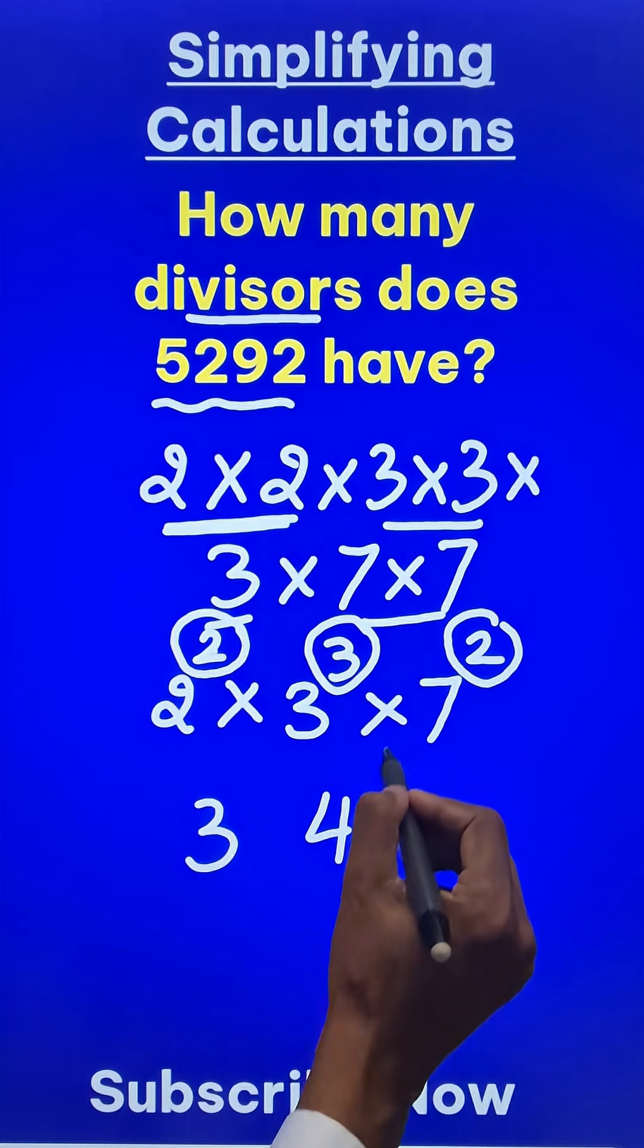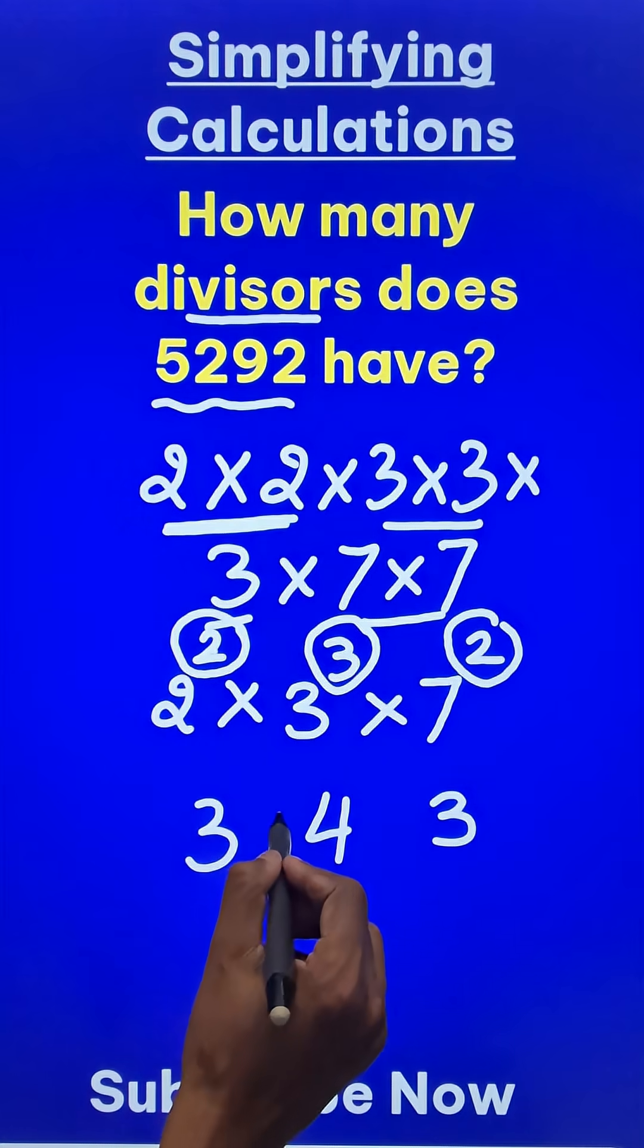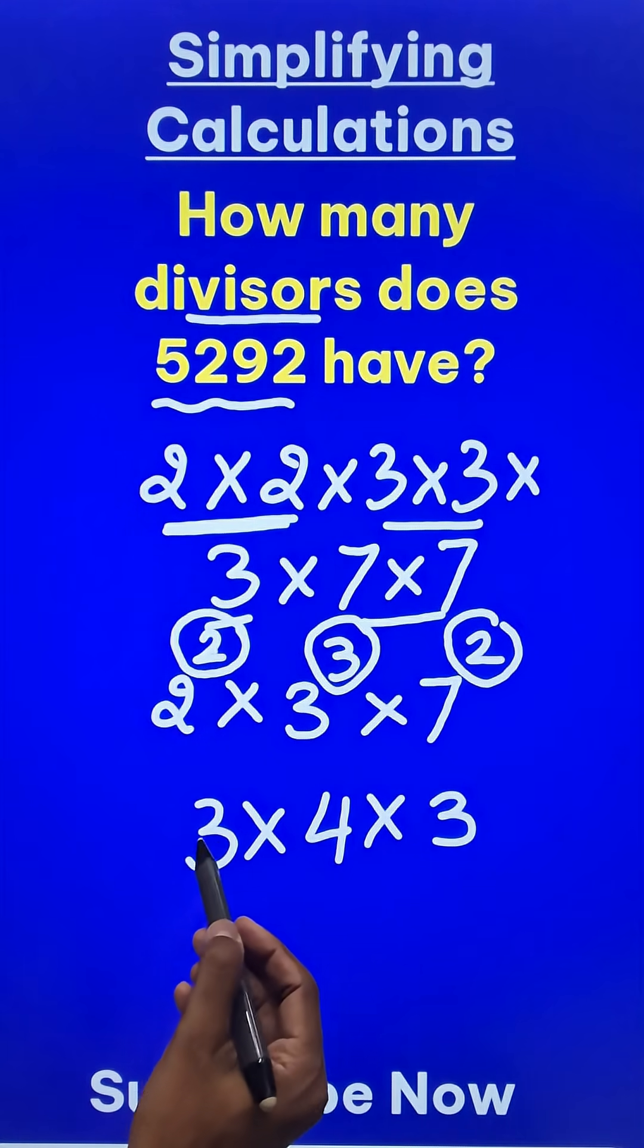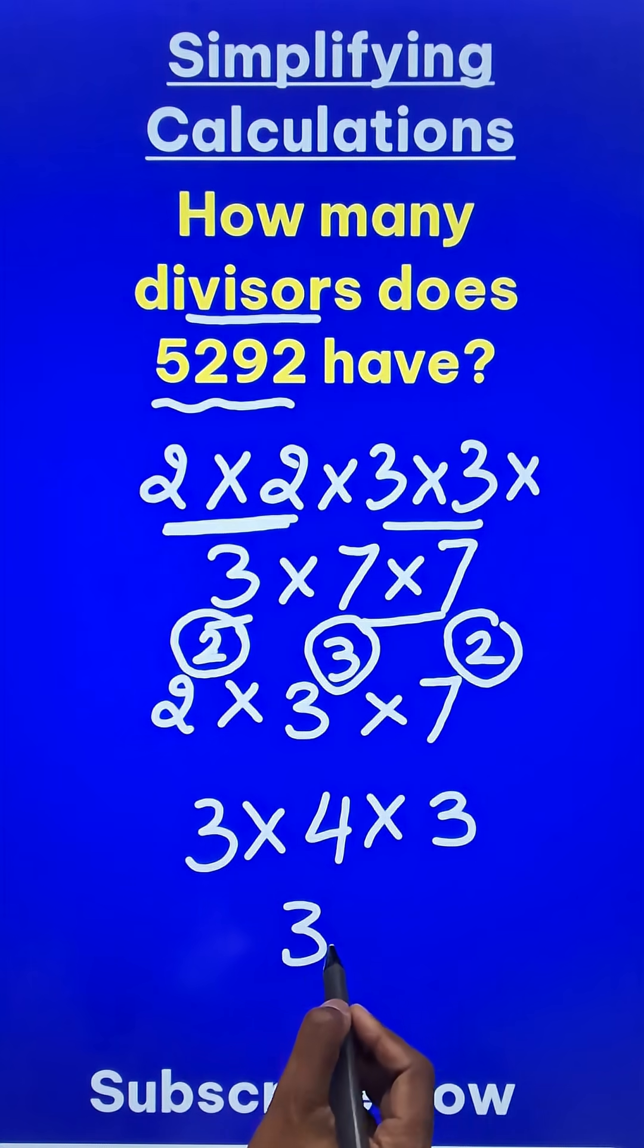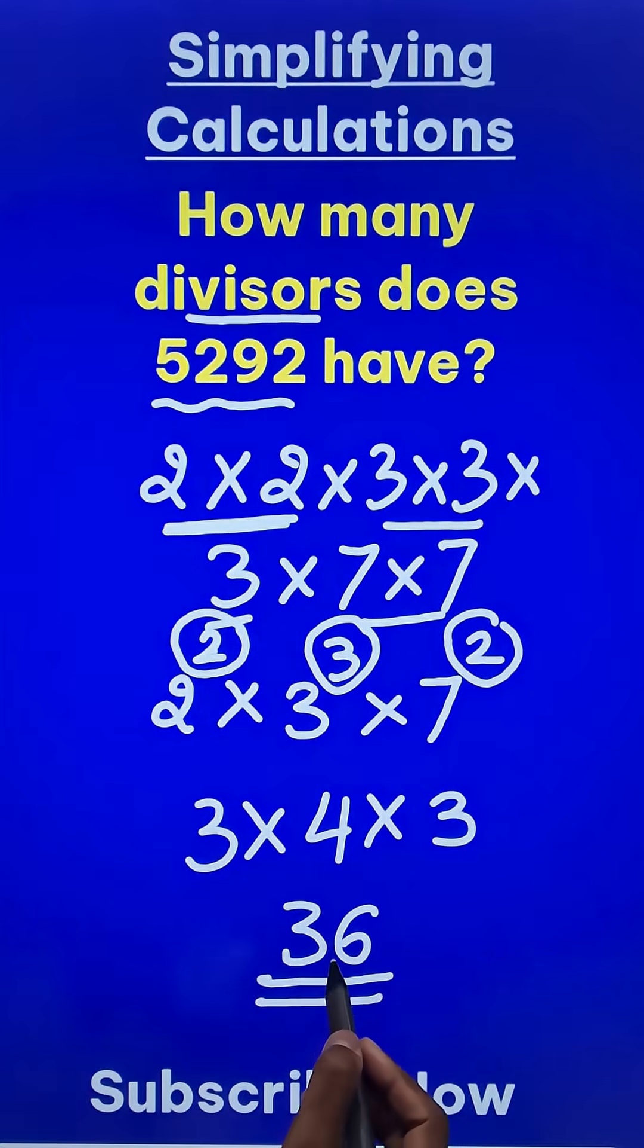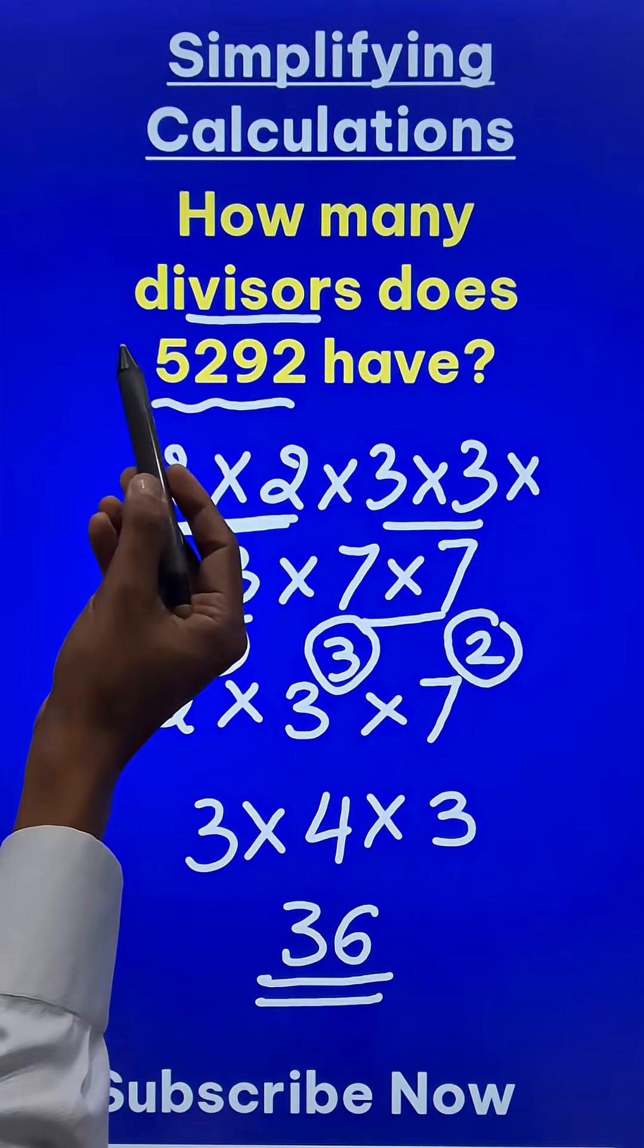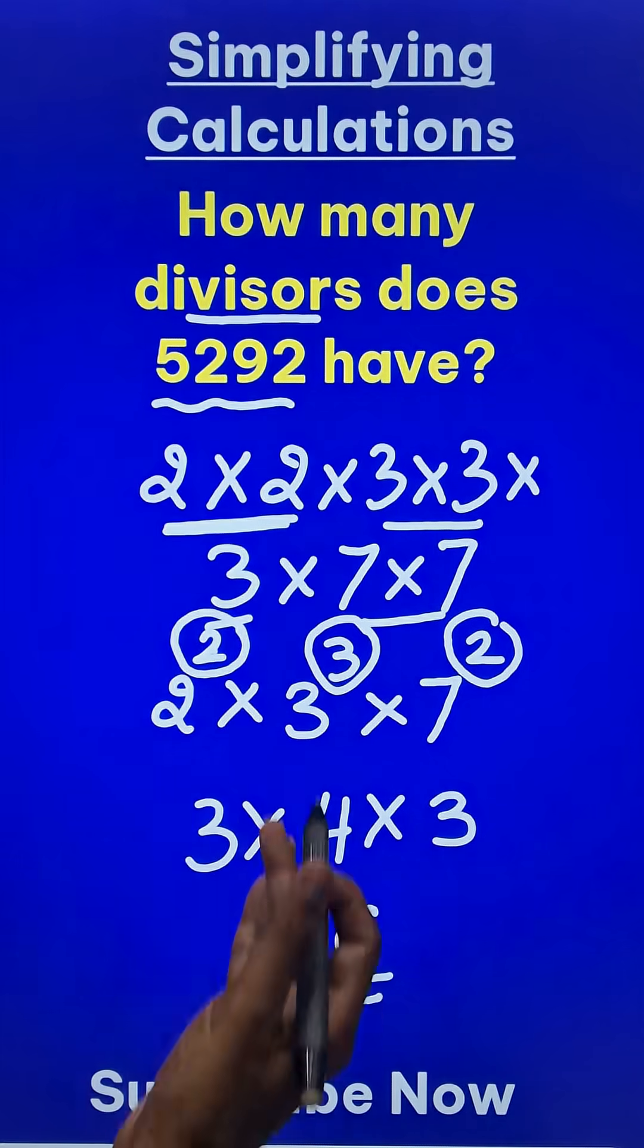And just multiply these numbers so obtained. You will get 3 times 4 is 12 and 12 times 3 is 36, and therefore there are 36 different divisors of 5292. Isn't that an amazing trick?